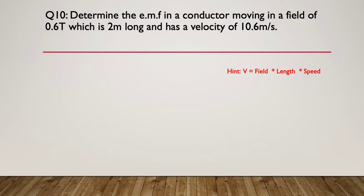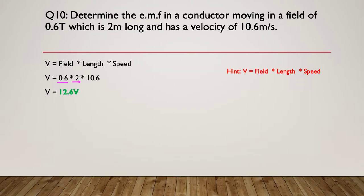Here's the hint: V equals field strength multiplied by length multiplied by speed. Our field strength is 0.6 tesla, the length is 2 metres — must be in metres — and the speed is 10.6 metres per second, given already in SI units. So 0.6 × 2 × 10.6 gives us an induced voltage of 12.6 volts.